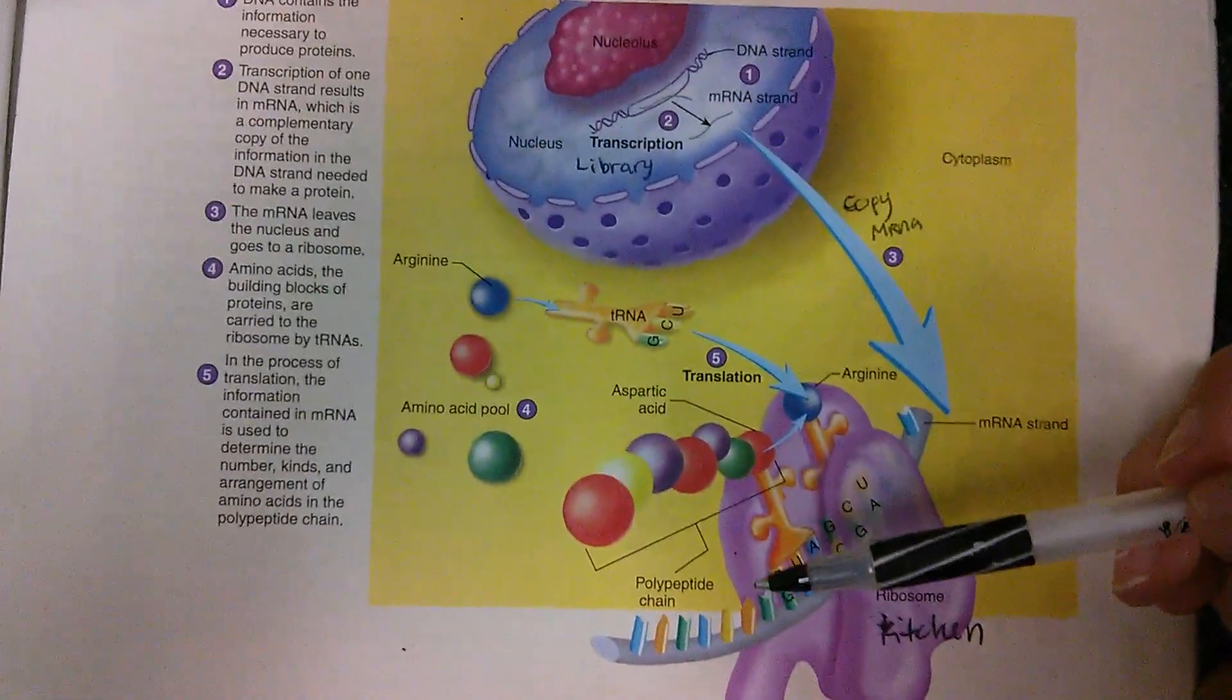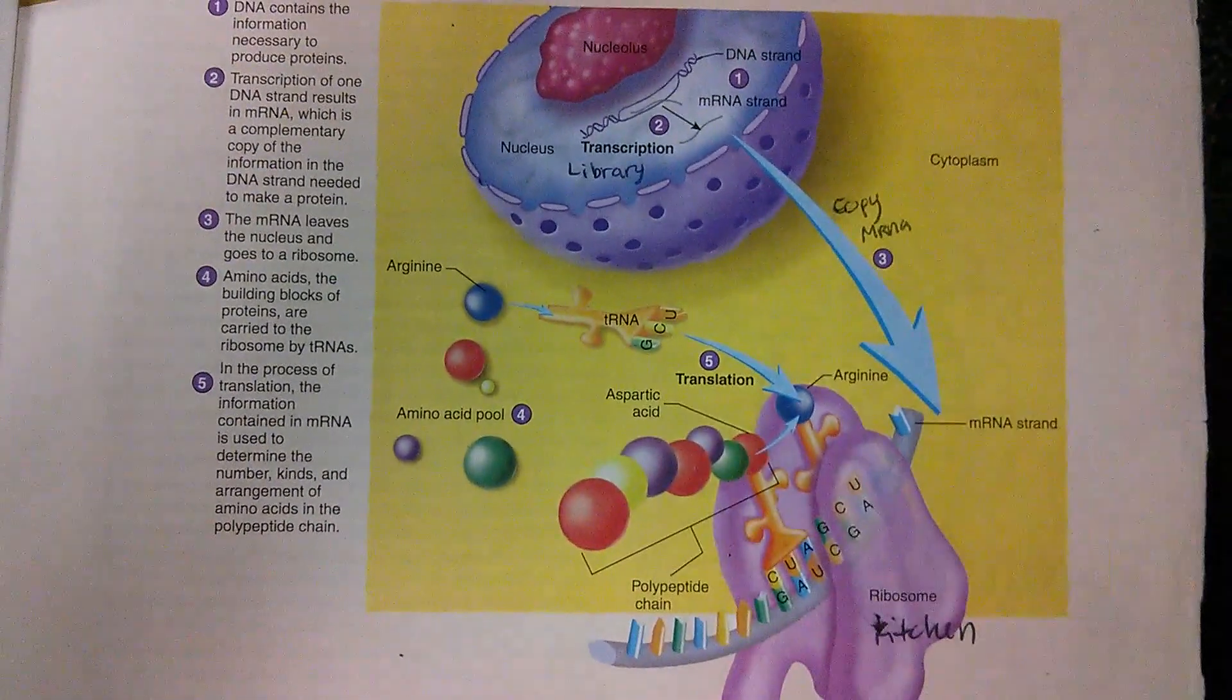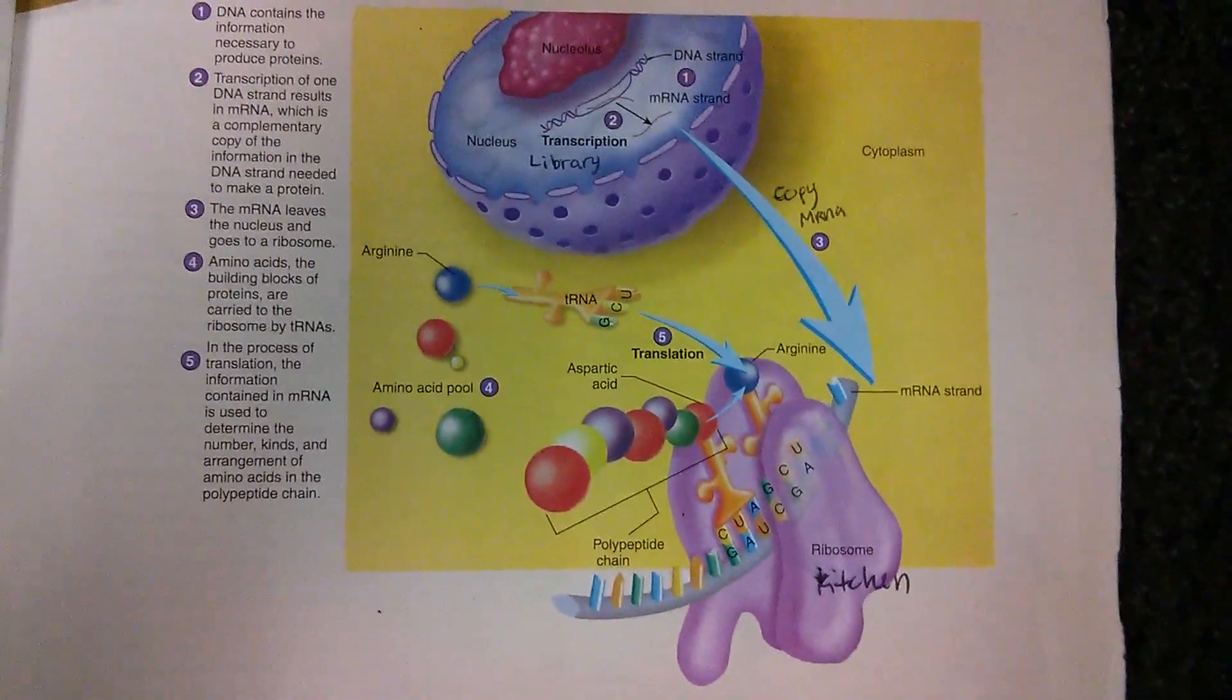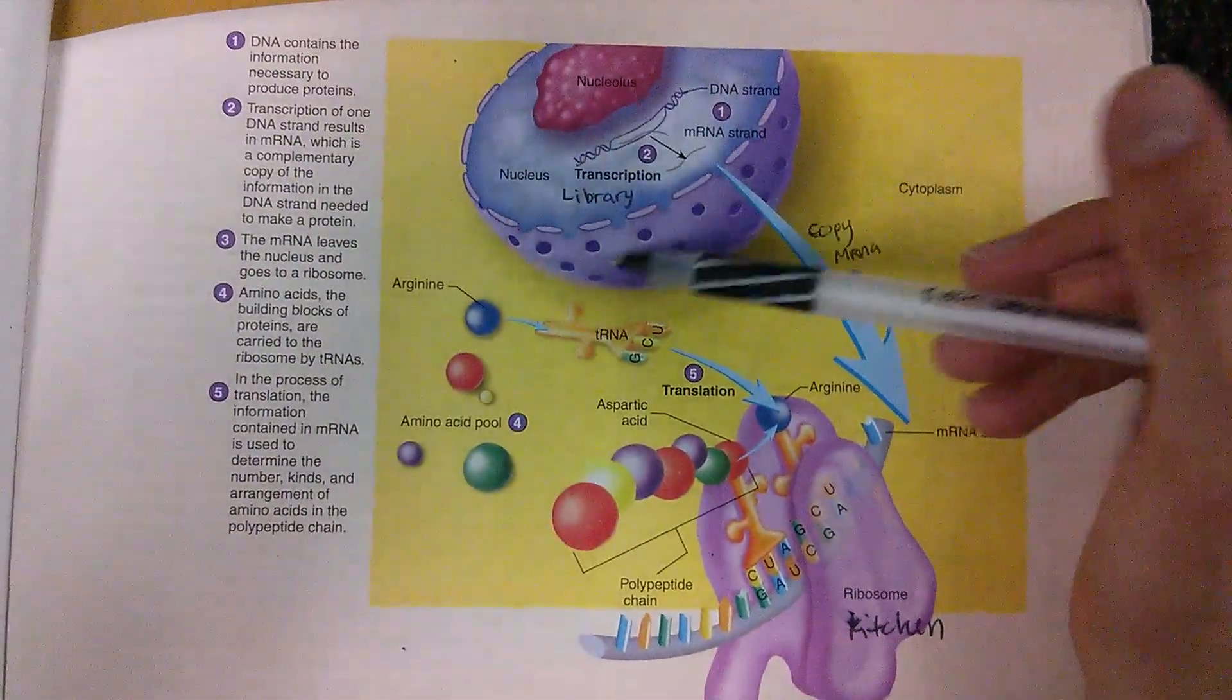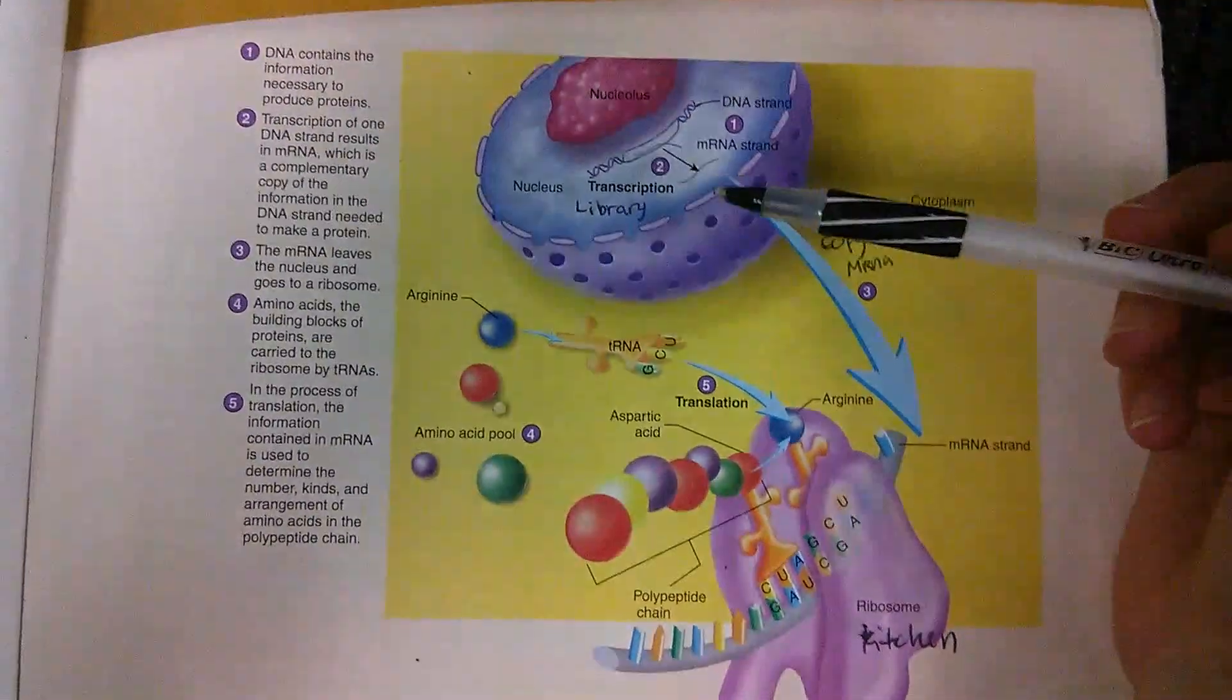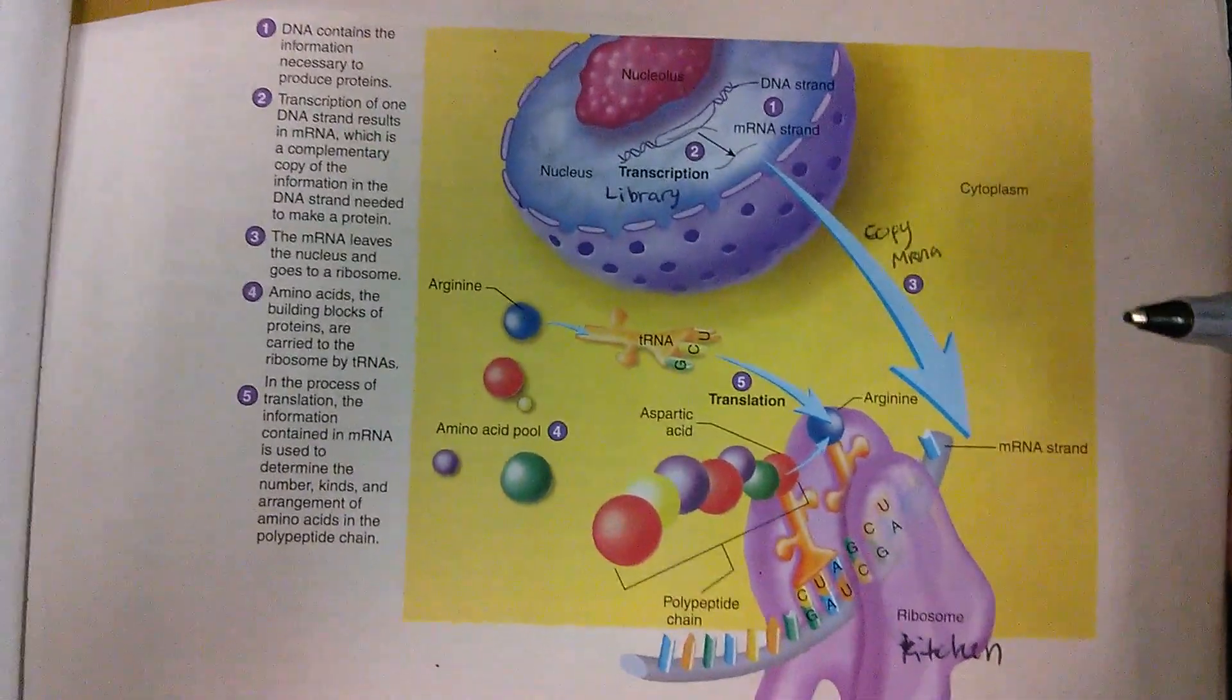But sometimes it can be hard to remember this whole process, so I have a little analogy to help remember. So this is the nucleus. Let's pretend this is the library. I wrote the library here because the library has lots of information, just like DNA has lots of information.